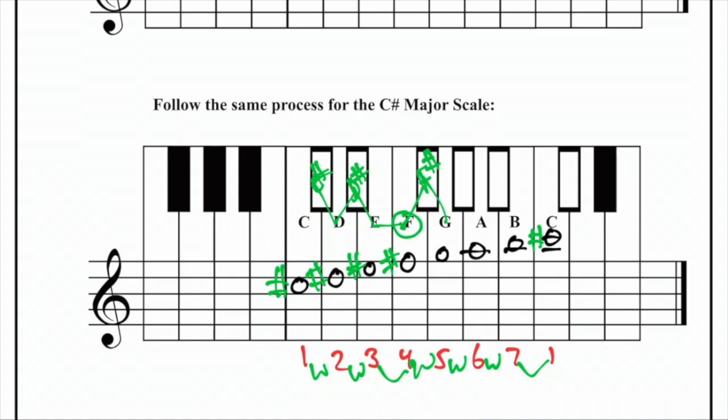F-sharp, whole step, is G-sharp. Another sharp in front of G. G-sharp to A-sharp. Draw another sharp in front of A.